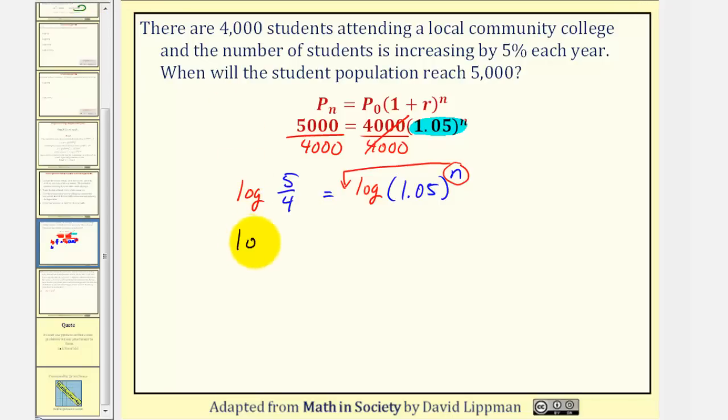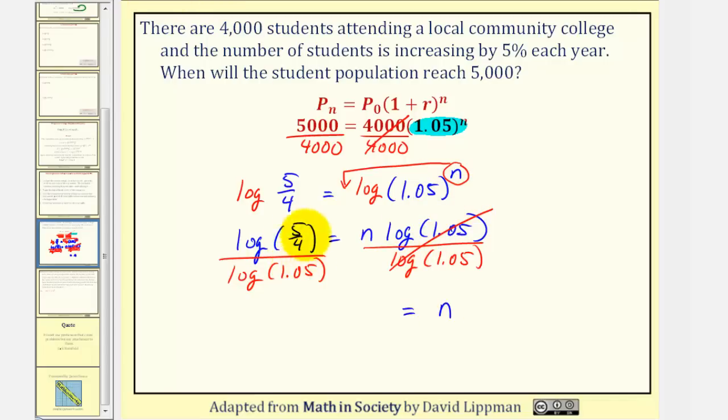So now we have log(5/4) = n·log(1.05). Now because we have a product here, we can solve for n by dividing both sides by log(1.05). So this simplifies to one. So now we have just n on the right, on the left, we'll go to the calculator to approximate this quotient.